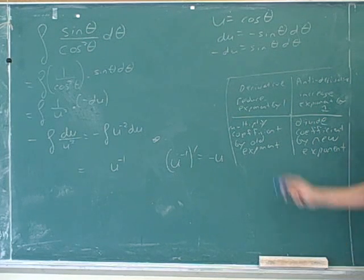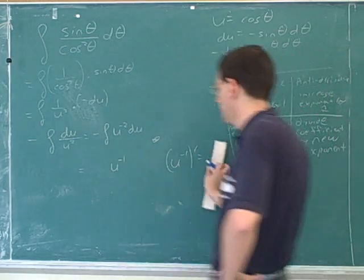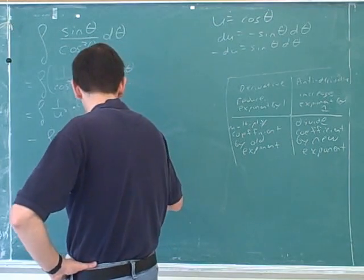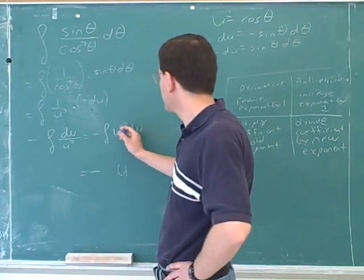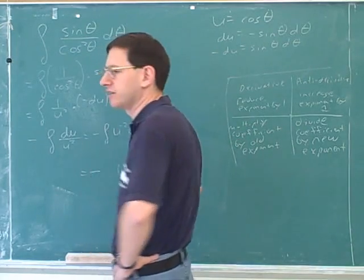This is where people tend to get confused. We know that we take a derivative by multiplying the coefficient by the old exponent. Well, here we'll divide the coefficient by the new exponent. So what would that give us here? Well, I have to increase this exponent by 1. Well, if you increase negative 2 by 1, you get negative 1.